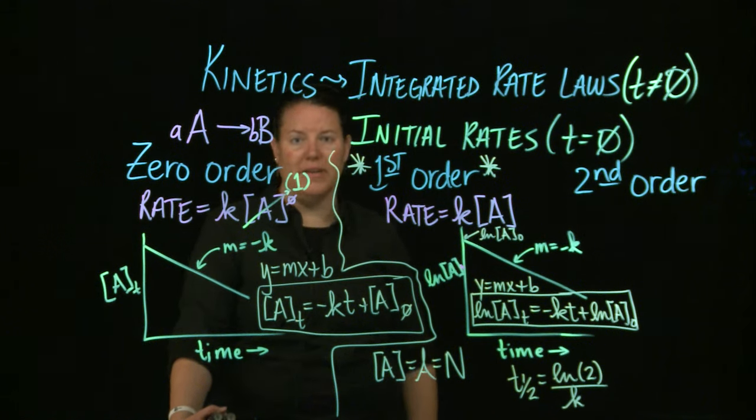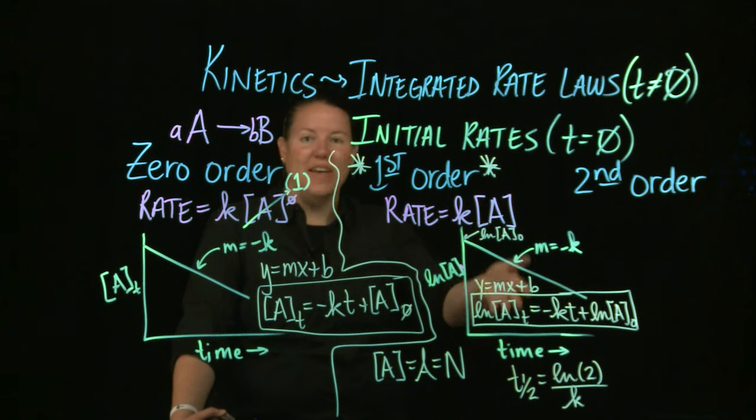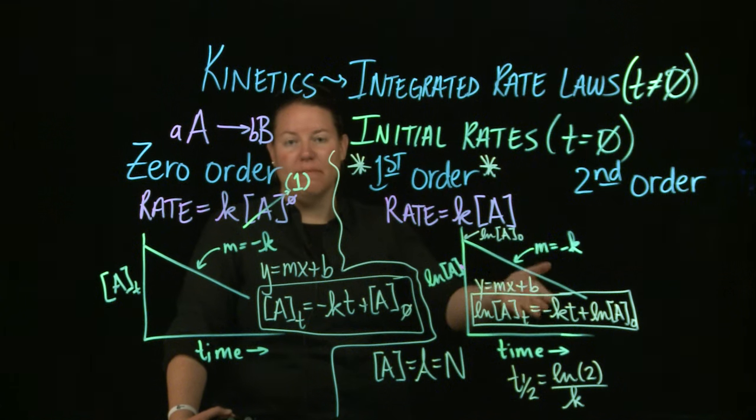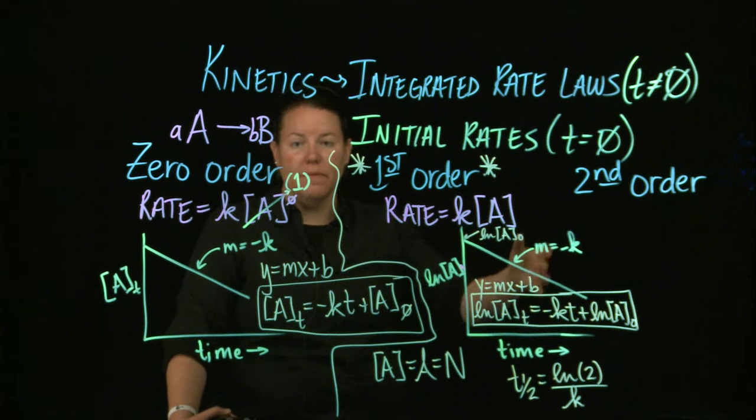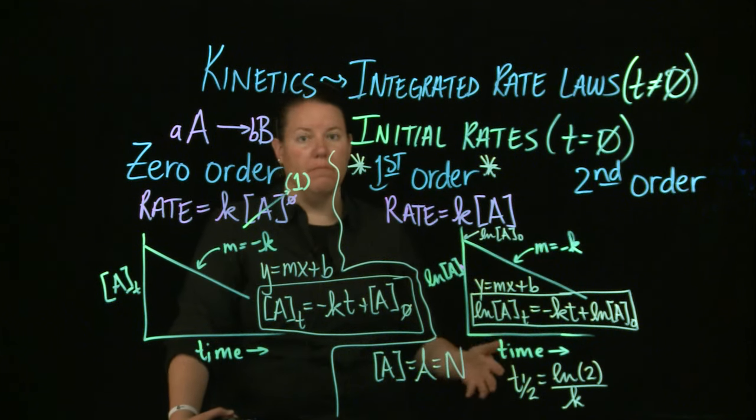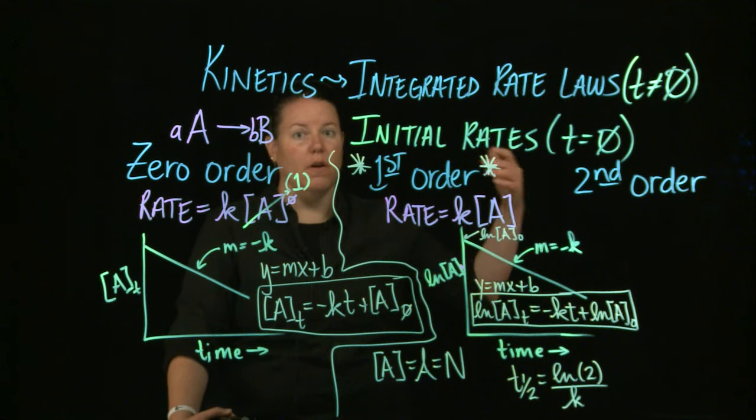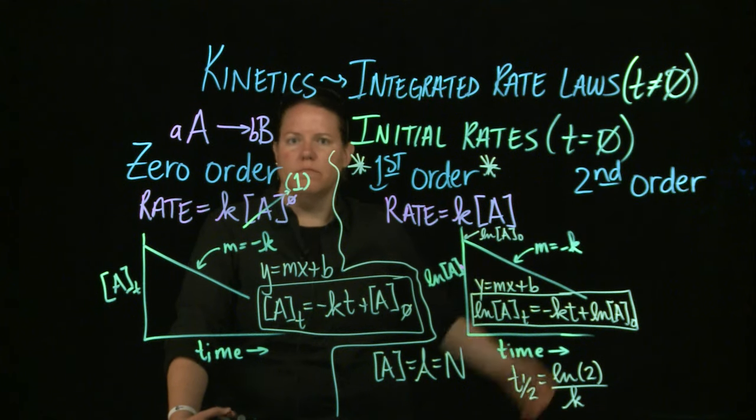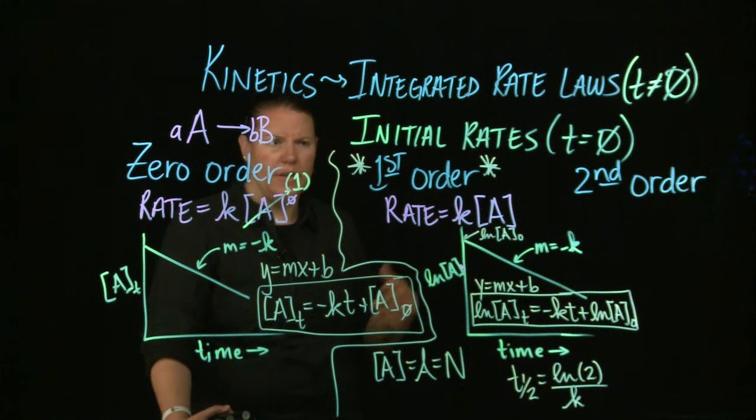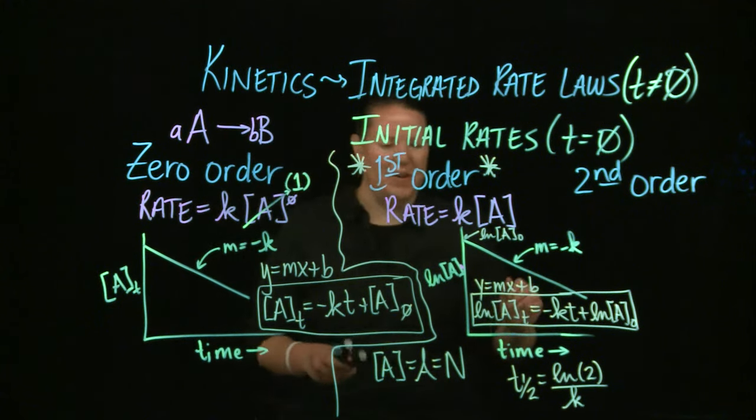So like for instance, if you started off with one gram, after one half-life you would have half a gram. After another half-life you would have a quarter of a gram. And after another half-life you'd have an eighth of a gram. So that is kind of the sense, that's what we're talking about.